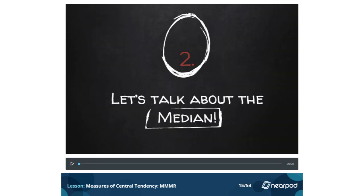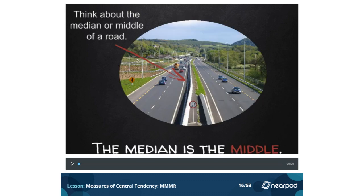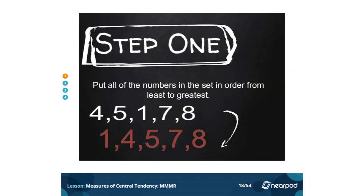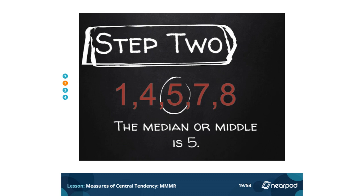Let's talk about the median. Think about the median as the middle of the road — the median is the middle of a set of numbers. Step 1: put all of the numbers in the set in order from least to greatest. Our number set is 4, 5, 1, 7, 8 — we sequence them to: 1, 4, 5, 7, 8. Step 2: find the middle number. 1 and 4 are on the left-hand side, 7 and 8 are on the right-hand side, so the median, or the middle number, is 5.